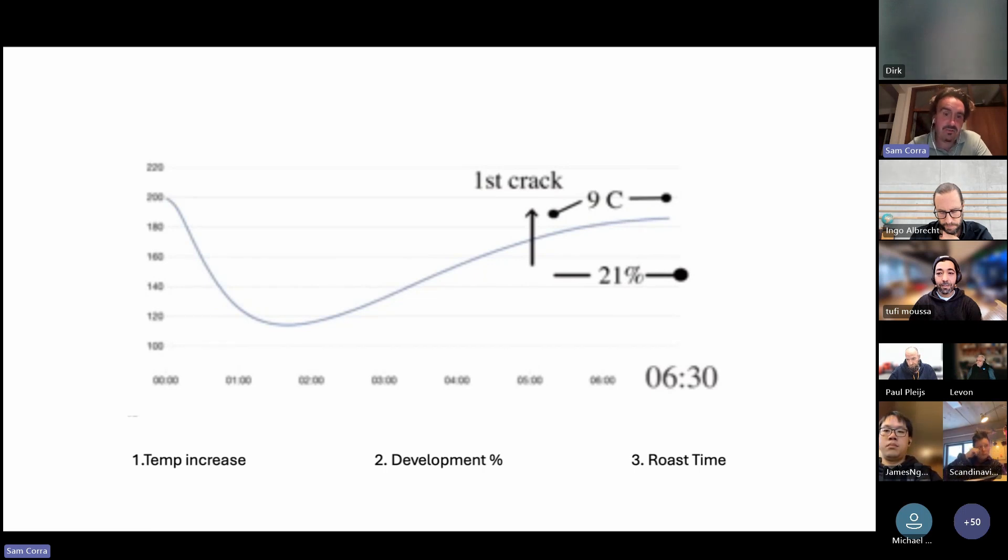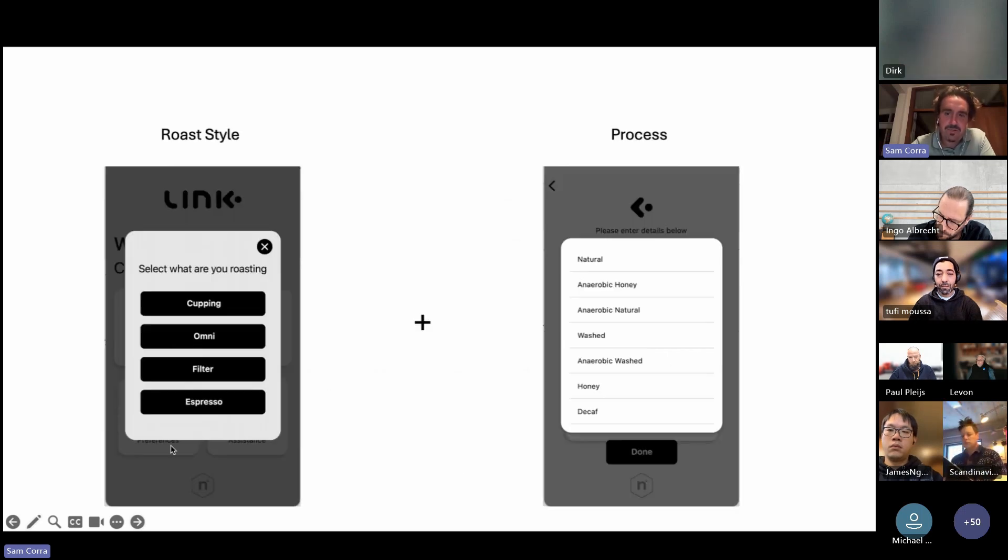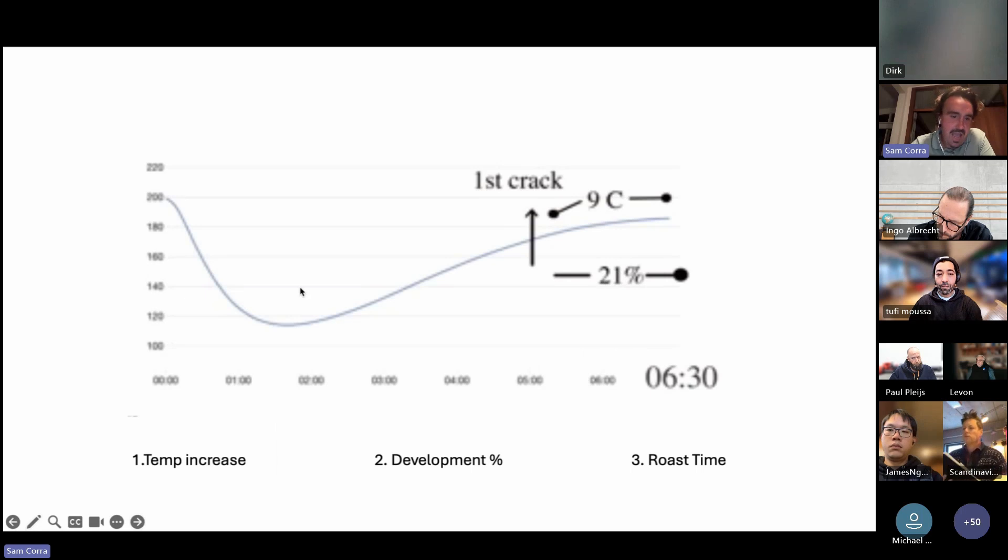You can take the elements from roast style, process, and the information you have to dictate what increase you're doing depending on what you're trying to prepare it for, as well as the style development percent. I would take that from the Link system, and roast time gives a pretty good indication of what you're looking for. It really depends on the power of your machine.